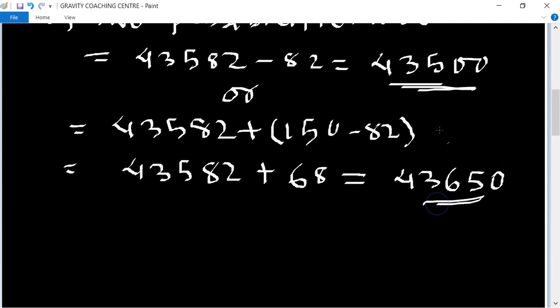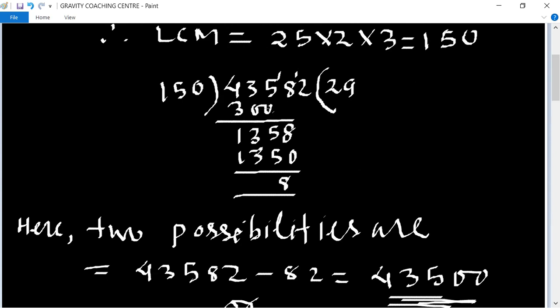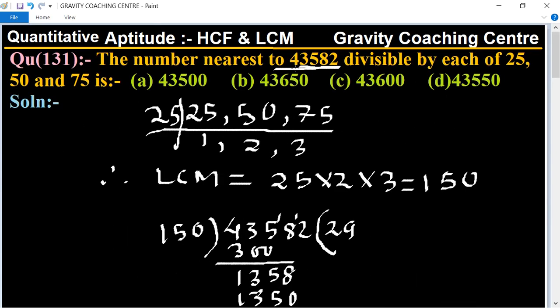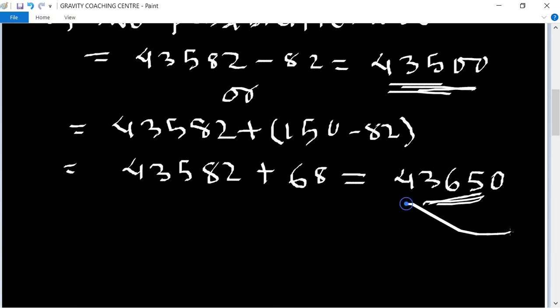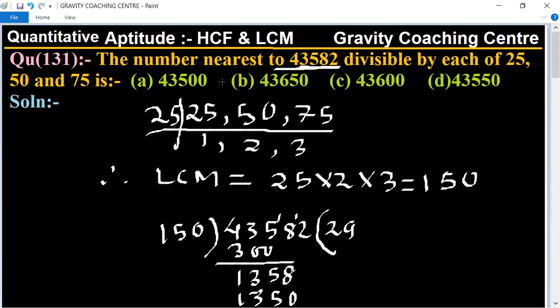So there are two possibilities. Which one is the nearest? Here, 43650 is the nearest to 43582. So the answer is 43650. Option B is the correct answer.